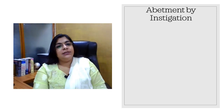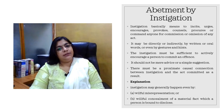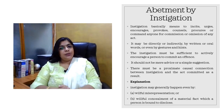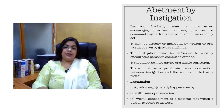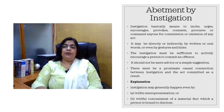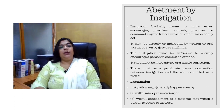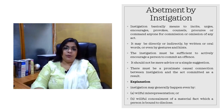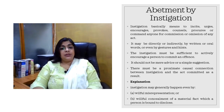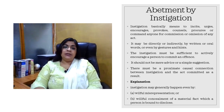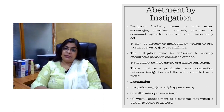Let's discuss these three levels in detail. The first one is abatement by instigation. That instigation could be in any form — it may be by inciting someone, or by urge, encouragement, provocation, counsel, procure, or command for any sort of commission or omission of the act.